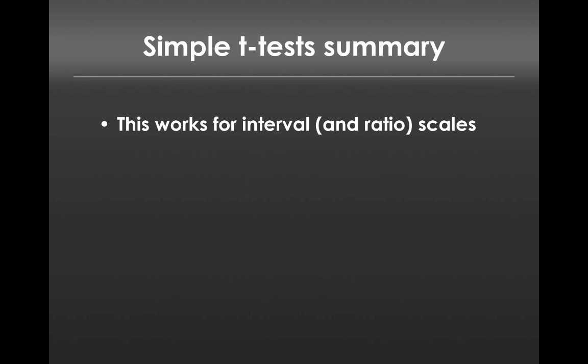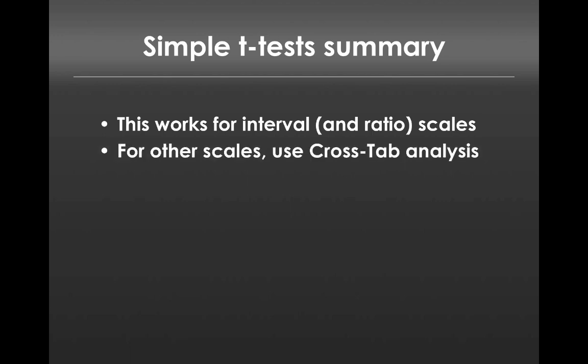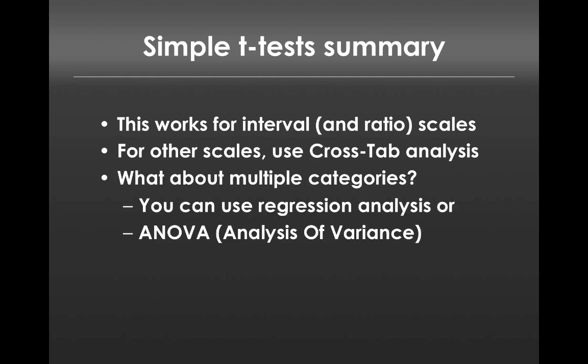To summarize t-tests: these work for interval and ratio scales. For other types of scales, we need to use crosstab analysis, which we'll discuss in a later video. Also, this is only relevant for two categories or two groups. For multiple groups, you can use either regression analysis or ANOVA, which we'll discuss in subsequent videos as well.